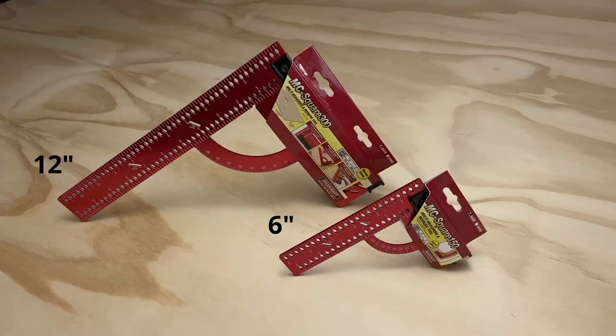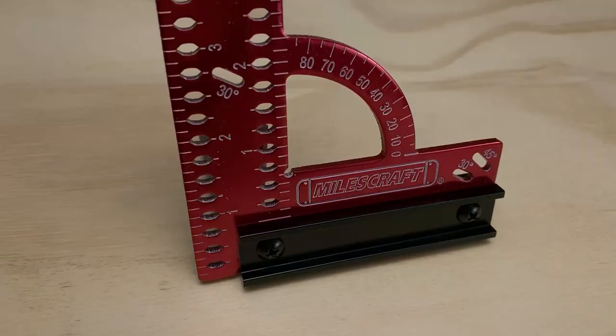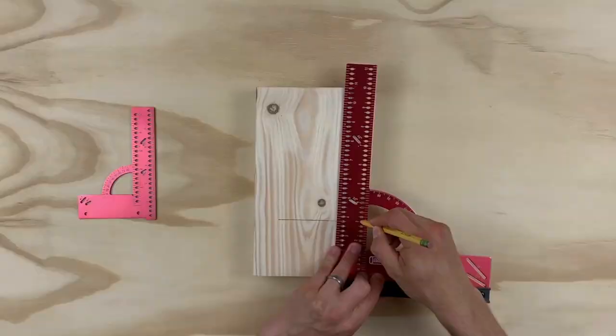The MC Square 150 and MC Square 300 by Miles Craft are reversible anodized aluminum framing squares with all you need for marking and measuring your projects.